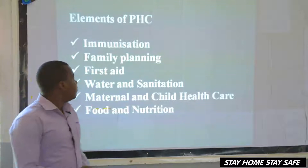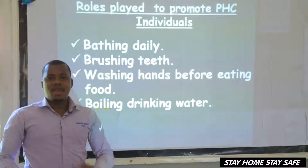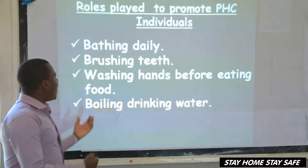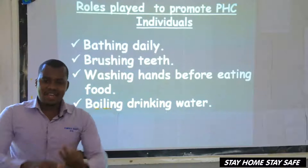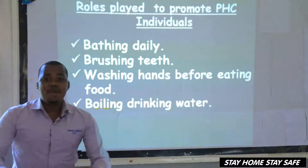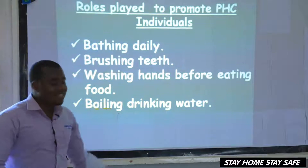As we discussed in our definition, primary health care is the essential care where individuals, families and communities come together to solve their health problems. What are the roles? Each of these three parties has specific roles. An individual has things they are supposed to do — those are the roles of an individual. The family also has roles to promote PHC. Then the communities also have various roles.